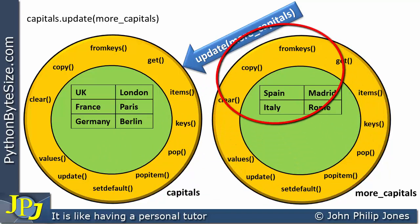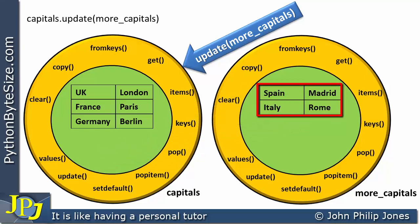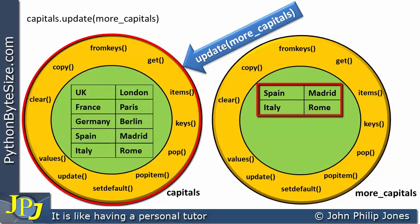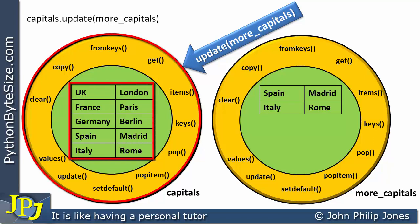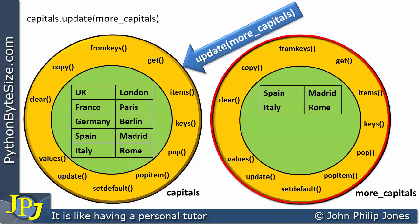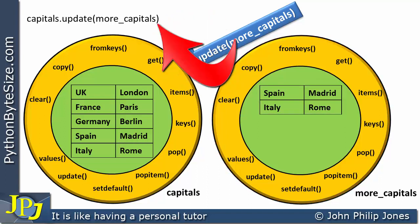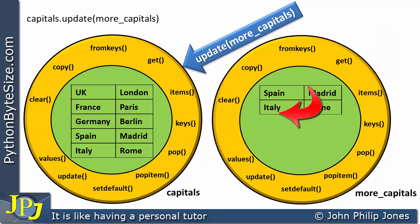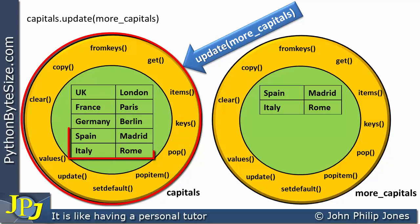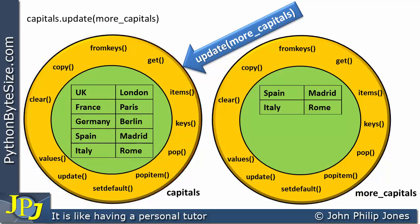The method will look at the 'more_capitals' object because we've passed its name. Consequently, it will have access to those two key-value pairs, and these pairs will be added to the 'capitals' object as shown. We can therefore see that the 'capitals' instance now has five key-value pairs, whereas 'more_capitals' still maintains the two key-value pairs it had before. So this statement only affected 'capitals' — it left 'more_capitals' alone, though it was accessed to allow those pairs to be copied across. We say that 'capitals' has been updated by the pairs residing in the other dictionary instance.